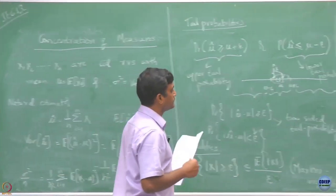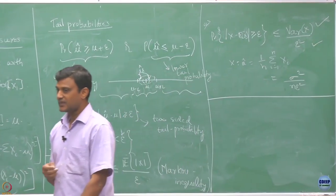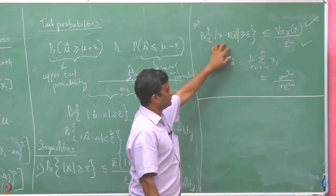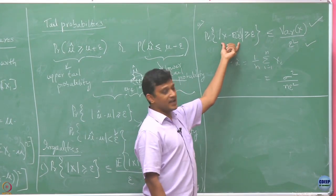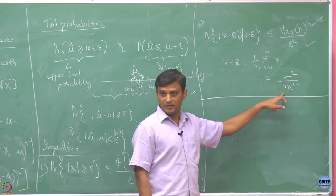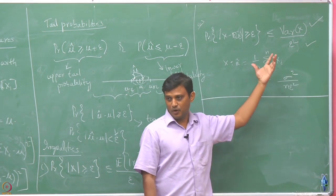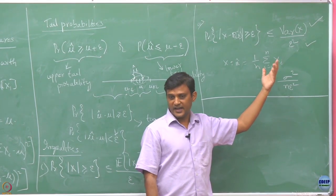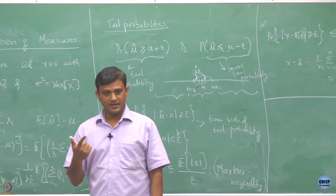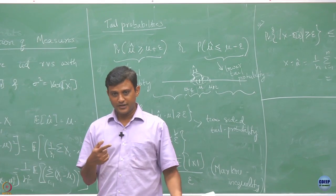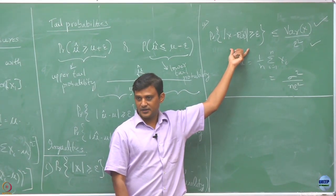The question is: is this the best bound we can have? Does this error go down only inversely in n, or can it go much faster? After all, this is just an upper bound. There is a lot of study by probabilists to get better bounds on such quantities, and better bounds help determine the minimum number of samples needed.